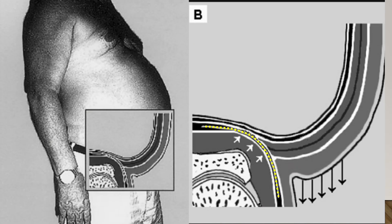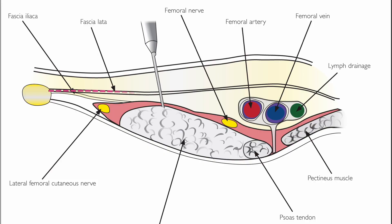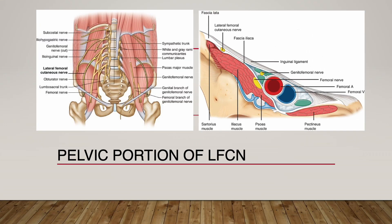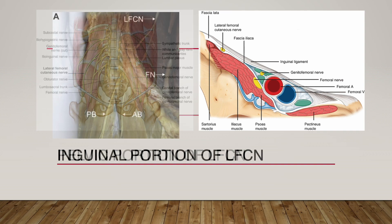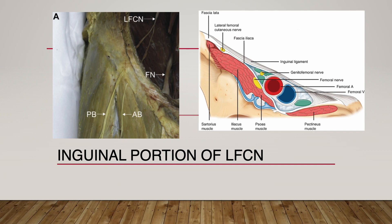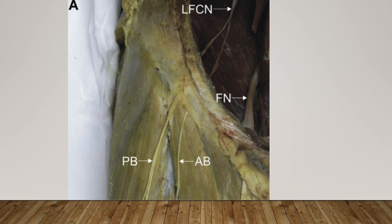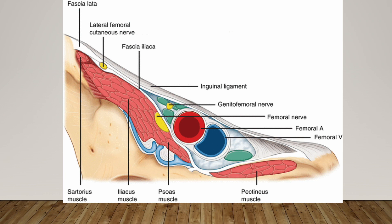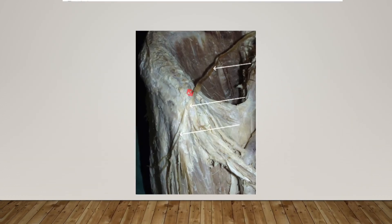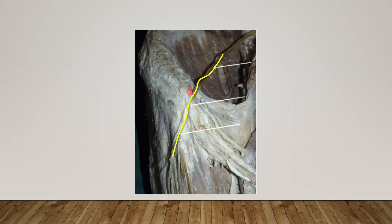The lateral femoral cutaneous nerve is placed in the interfascial space formed by fascia iliaca and fascia latae at the pelvic and inguinal portions. I'll skip the pelvic portion due to limited lecture time — if you want more details, please visit my YouTube channel. Let's move on to the inguinal portion. Most of the lateral femoral cutaneous nerve exits the pelvic cavity under the inguinal ligament, which is a highly echogenic structure, making it challenging to find the nerve unless it is pathologically swollen.